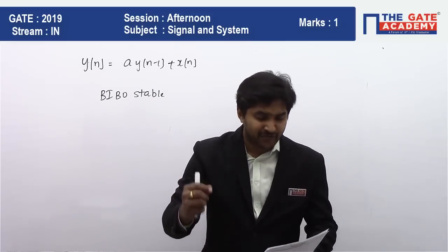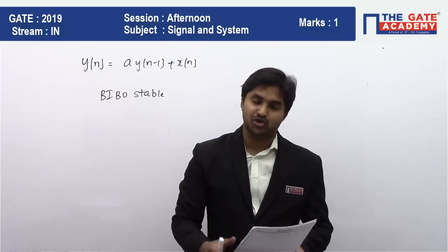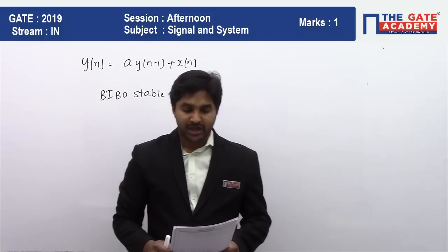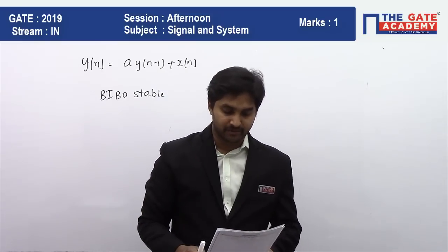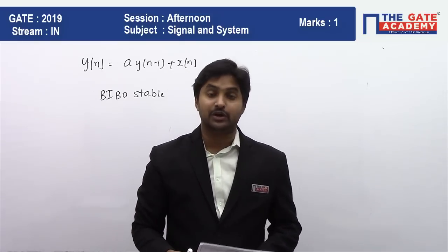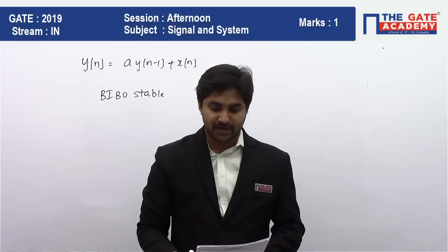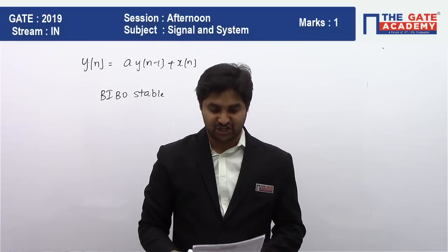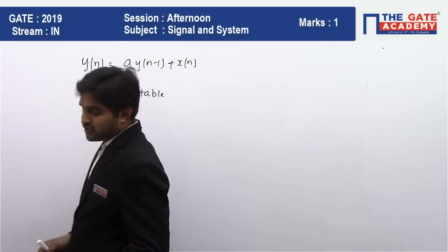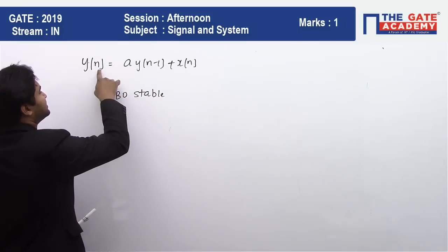Let me first read the question. y(n) = a·y(n-1) + x(n) will be BIBO stable if a is blank. So here you have to understand that it's a difference equation which has already been given.